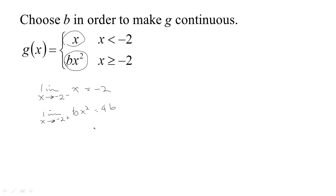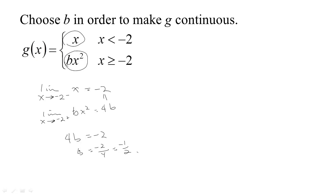In order for a function to be continuous at negative 2, the limit has to exist. And in order for the limit to exist, the left and right-hand limits would have to agree, which means 4b has to equal negative 2. So b needs to be negative 2 over 4, or negative one half.